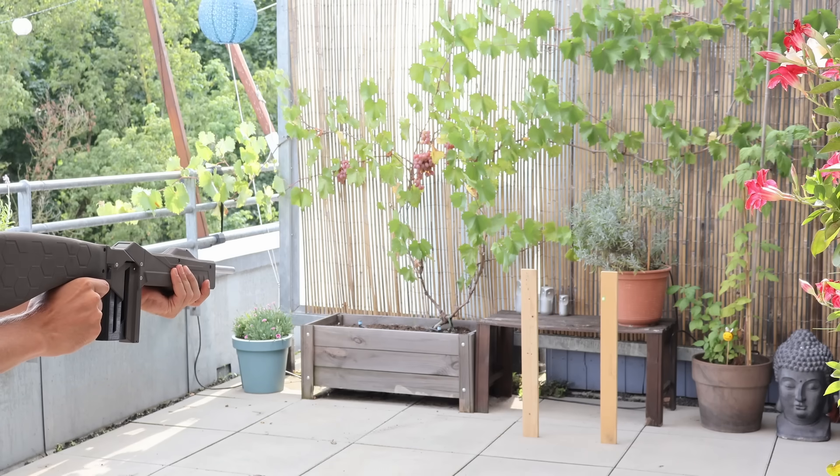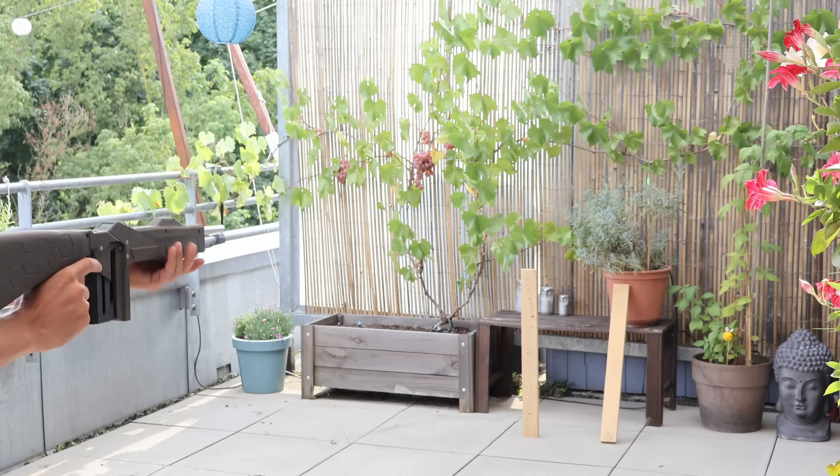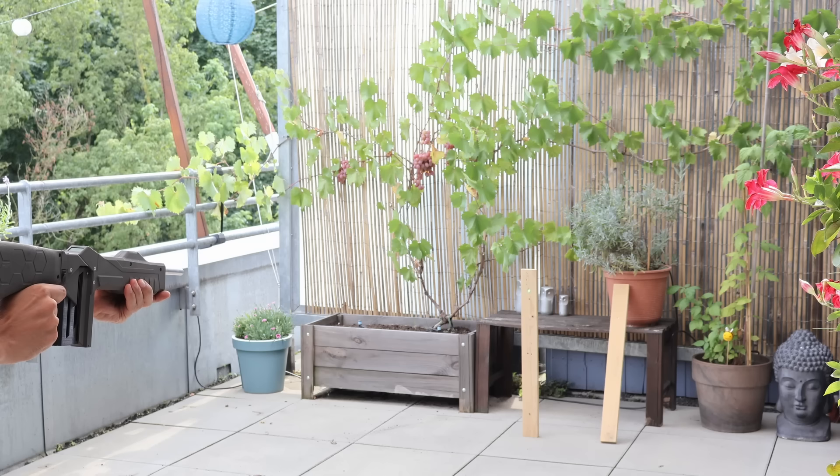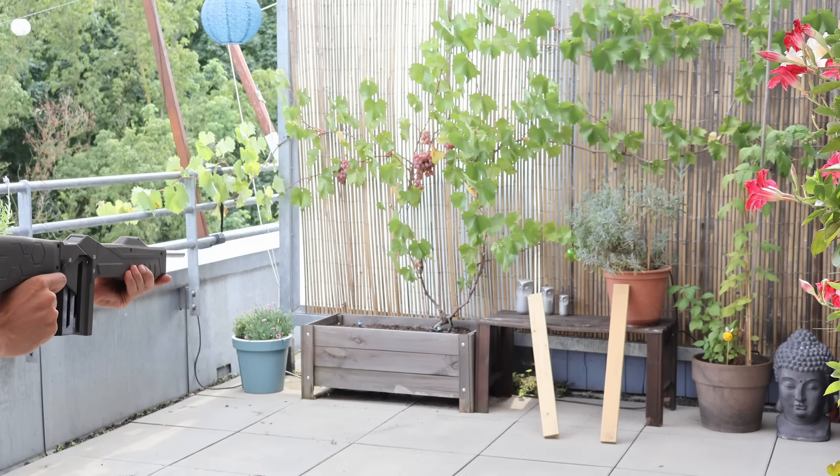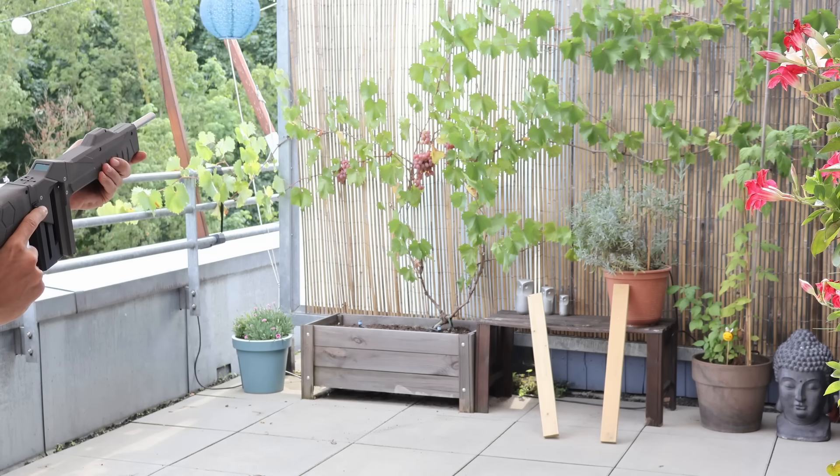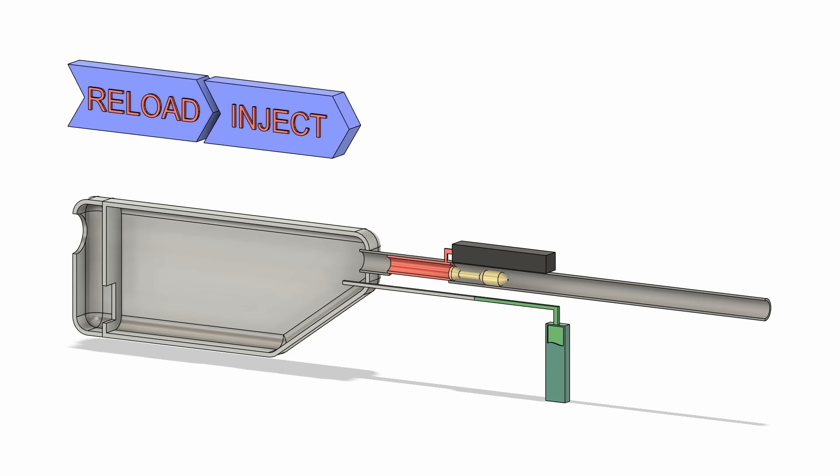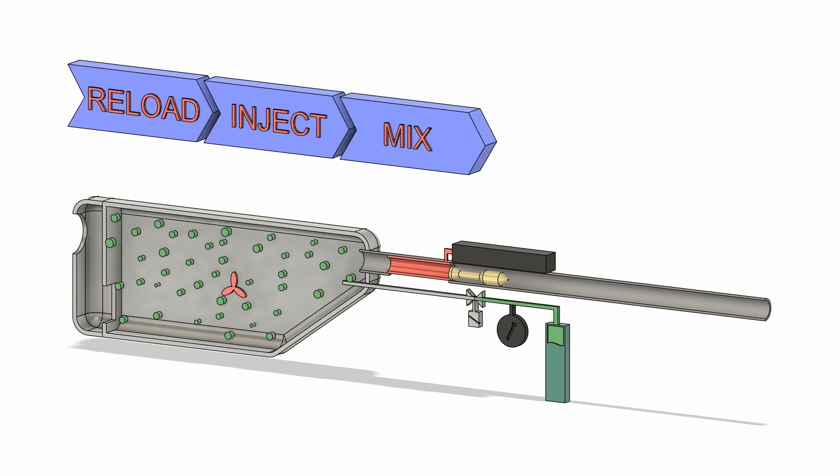Now I'll show you the challenges I faced, what features this thing has and what it can do. To fully automate a potato cannon, it takes more steps than you might think. First a new shot has to be loaded into the barrel. Now the gas comes into play. Injecting the right amount is tricky, because without precision there's no power. After injecting, air and gas needs to be mixed well.